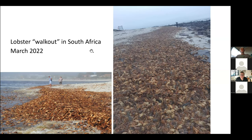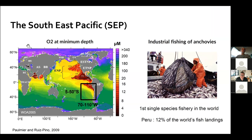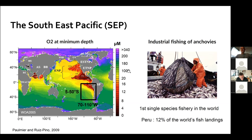Why the Southeast Pacific? First, it hosts one of the largest oxygen minimum zones, the OMZ. Here is a map of the world's OMZs showing concentration at minimum depth. The Southeast Pacific OMZ has hypoxic to suboxic levels of oxygen. This OMZ is associated with an eastern boundary upwelling system, complex systems of currents, the equatorial current system, and the Peru-Chile undercurrent responsible for maintaining it. The OMZ is nonetheless highly productive — it's the first single-species fishery in the world, representing 12% of the world's fish landing in Peru. It's also subjected to natural variability, mainly the El Niño-Southern Oscillation, also known as ENSO.